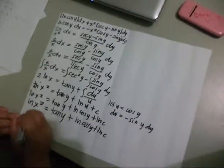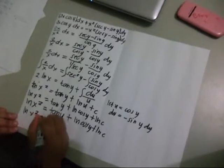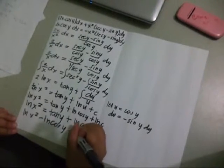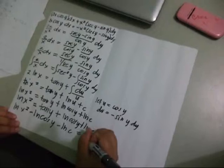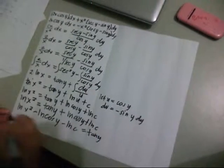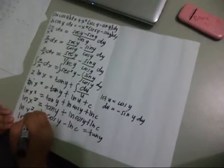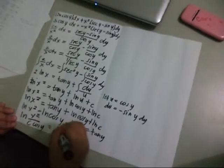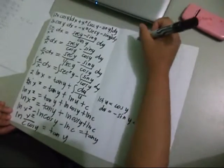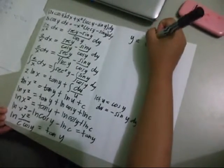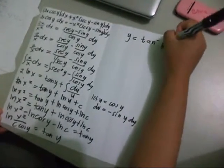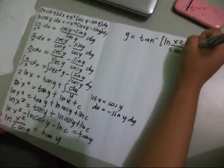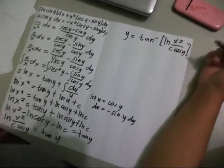This can also be written as ln of x squared minus ln of cosine y minus ln of c is equal to tangent y. Then this will become ln of x squared over c cosine y equals tangent y. So y equals arctan of ln of x squared over c cosine y, and this will be our general solution for the equation.